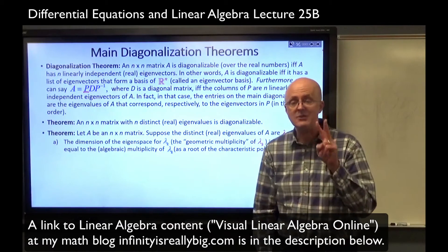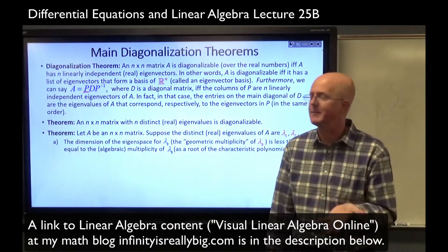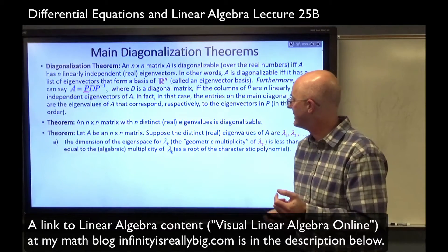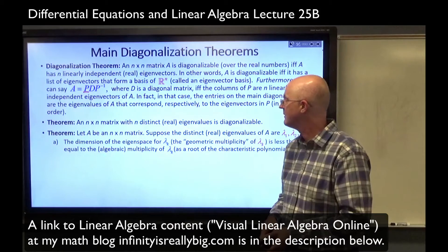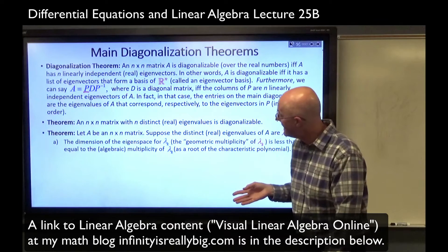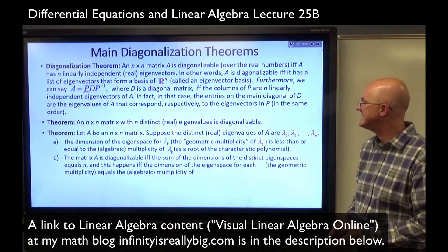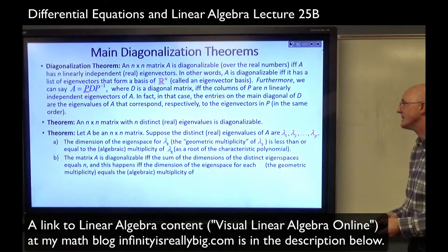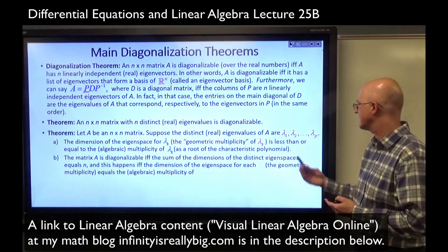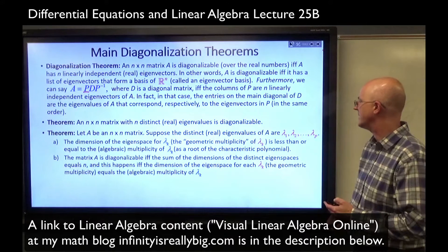If lambda K had multiplicity 2, its eigenspace is either going to be one-dimensional or two-dimensional. It can't be zero-dimensional because eigenvectors by definition have to be non-zero, although the eigenspace includes the zero vector. If the multiplicity of lambda K as a root of the characteristic polynomial is three, then the dimension of the eigenspace for that value of lambda could be one, two, or three. Part B says A is diagonalizable if and only if the sum of the dimensions of the distinct eigenspaces equals n, and this happens if and only if the dimension of the eigenspace for each lambda K equals the algebraic multiplicity of that lambda K.